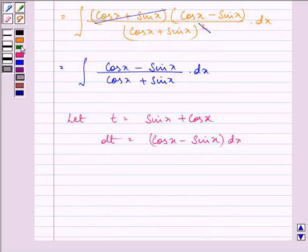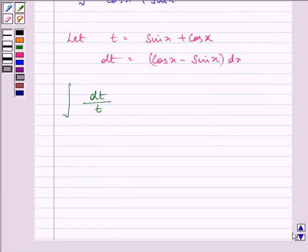So we have the integral of dt/t. That is log|t| + c, and on substituting the value of t as sin x + cos x...